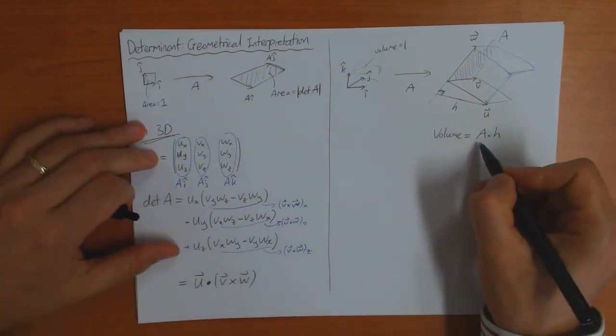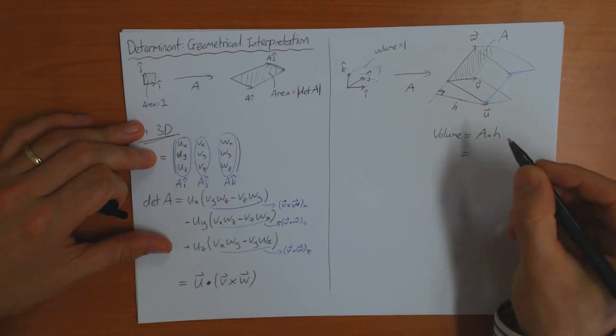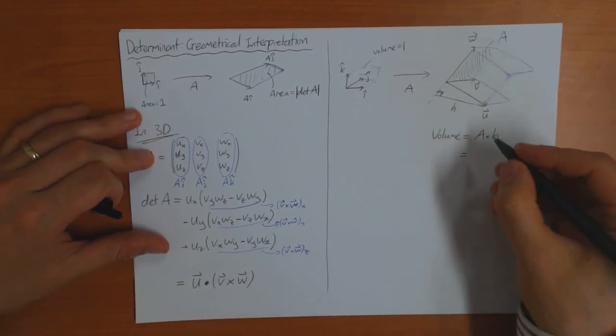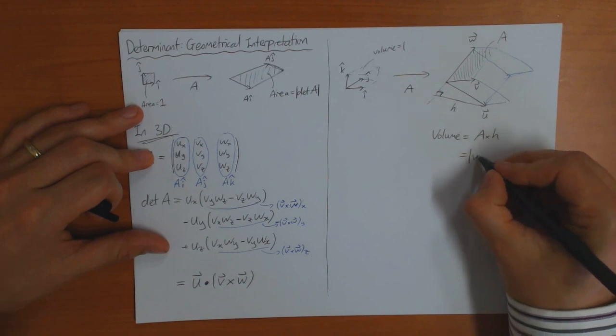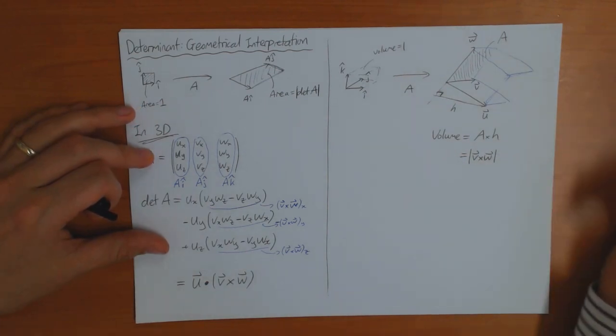But we know that the volume of A, this is just the same as the two-dimensional case, and there we show that the area of A is equal to the size of V cross W.